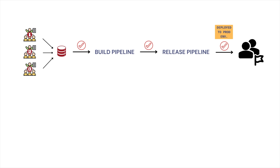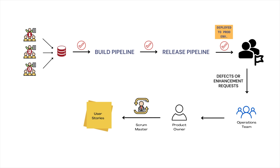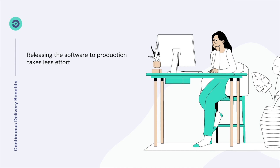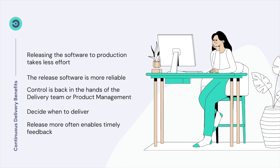Once deployed to the production environment, the software becomes available to end users. Defects and enhancement requests from users are recorded by the operations team and communicated to product management — in our case, to the EasySoft product owner — with the help of the scrum master. The product owner converts these into small bite-sized user stories, which are prioritized and merged into the product backlog for a future sprint. With continuous delivery in place, releasing software to production takes less effort, happens with minimal human involvement using automated and repeatable pipelines, and is more reliable. Continuous delivery puts control back into the hands of the delivery team or product management, and allows more frequent releases that enable early feedback for timely improvement.